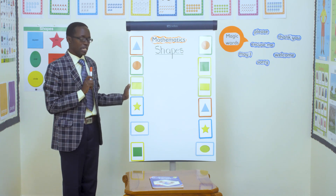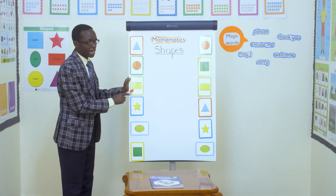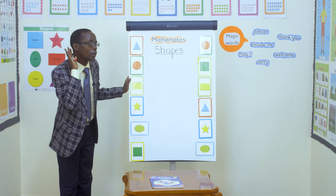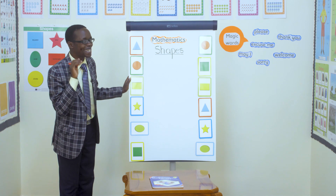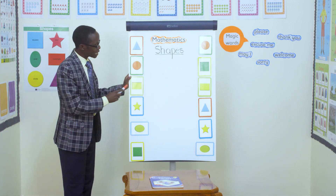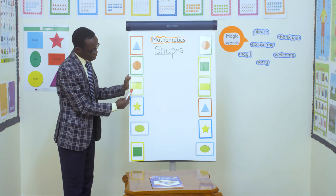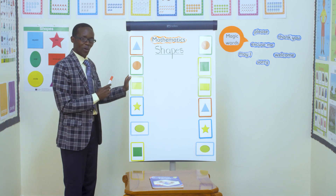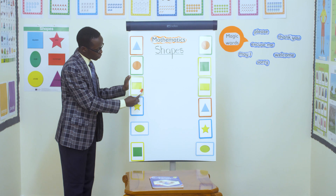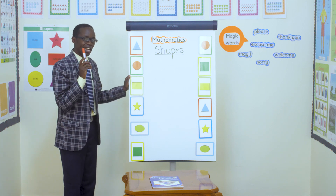Now let's go and look at the other shape. This one we call it rectangle. Can you see rectangle? Rectangle. Wonderful. It usually has four sides. One, two, three, four. Let's count. One, two, three, four. Rectangle.